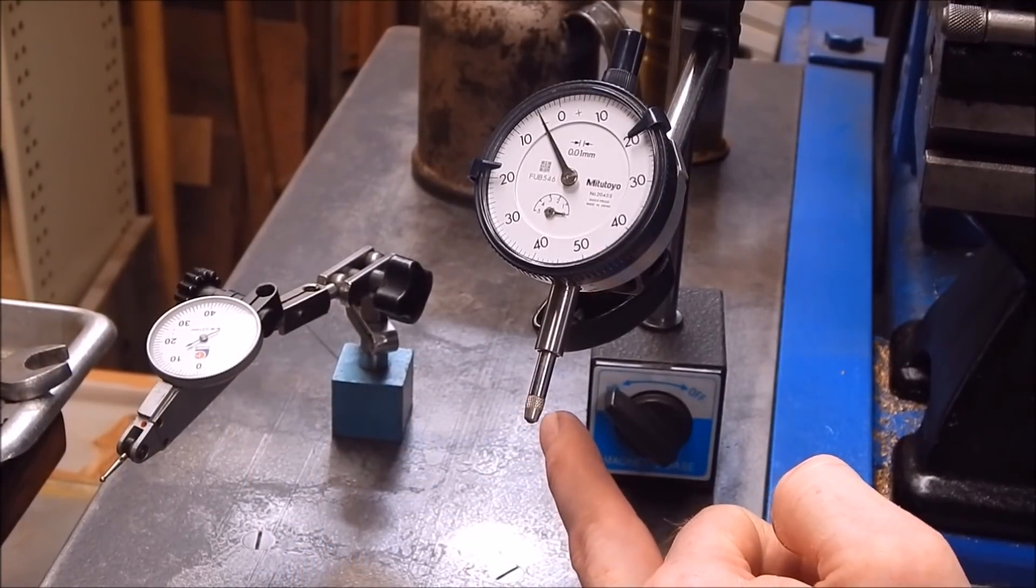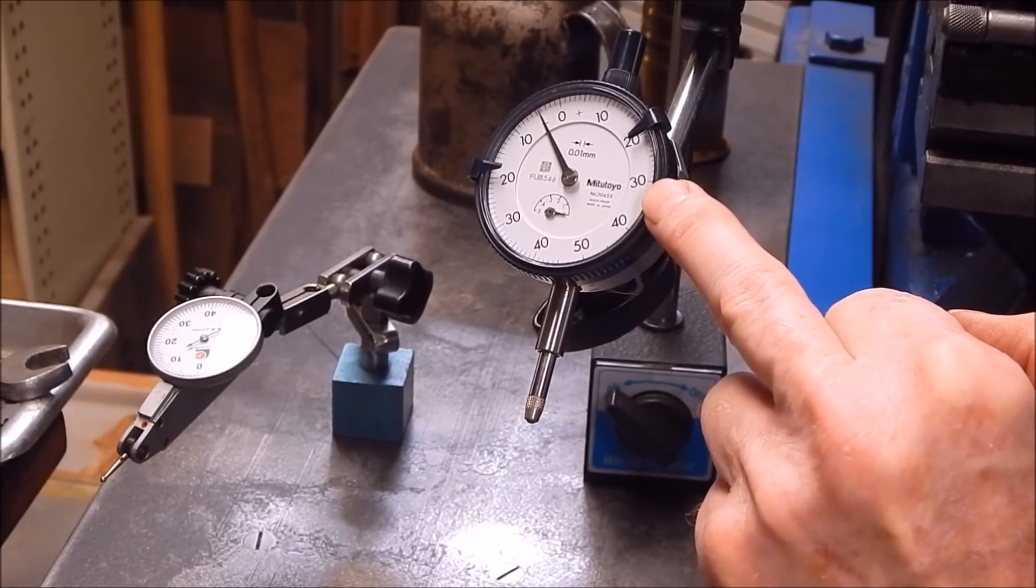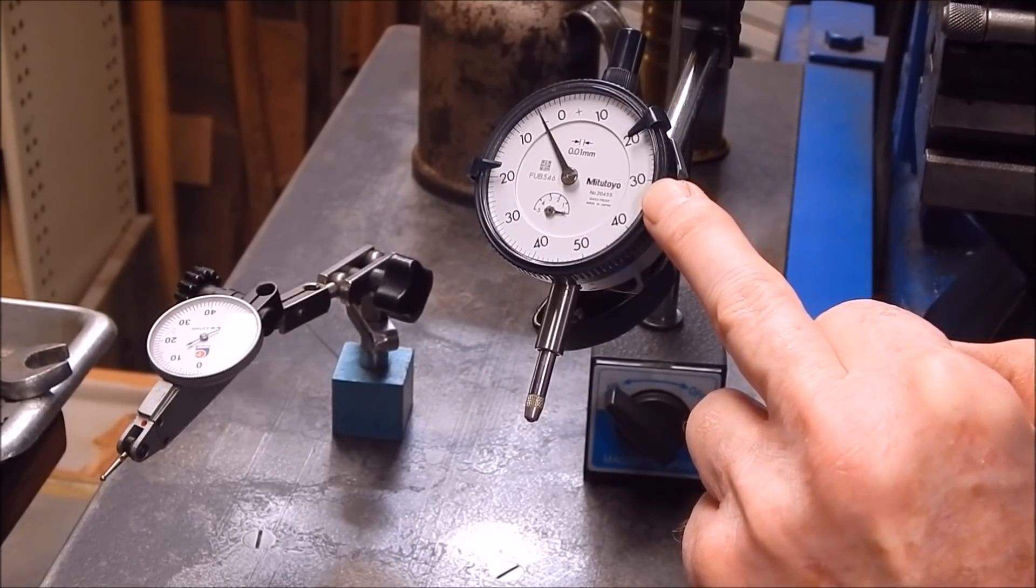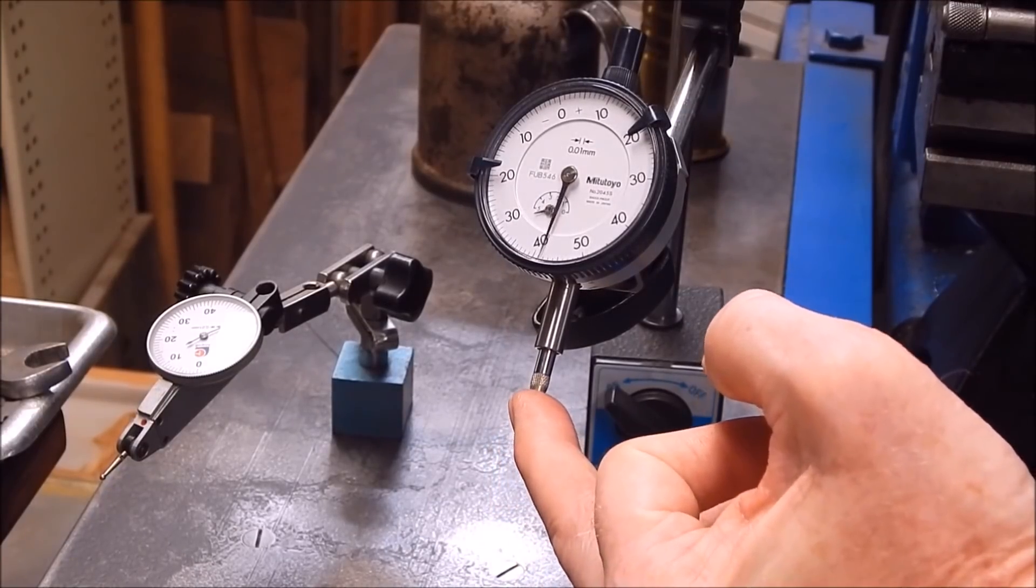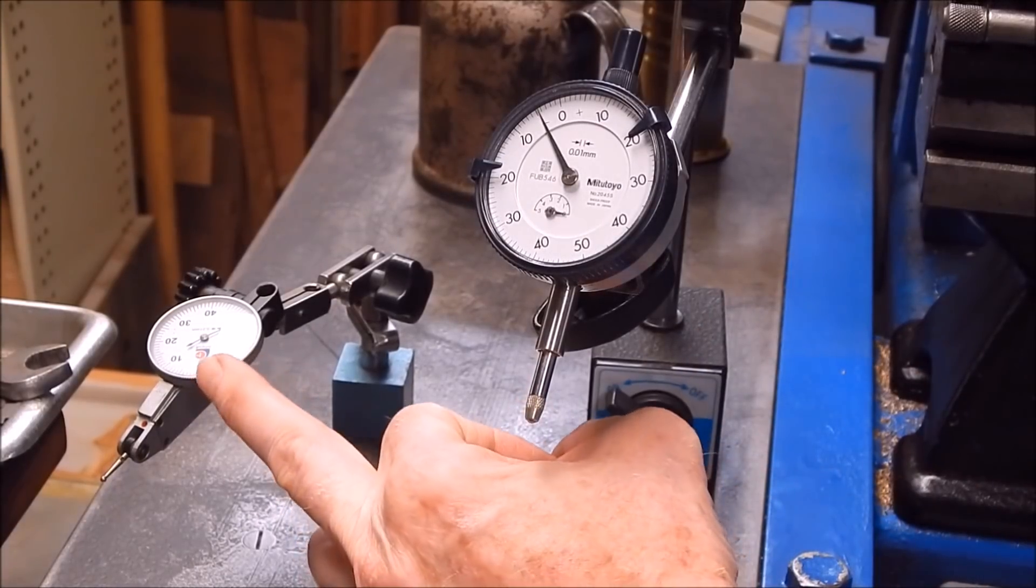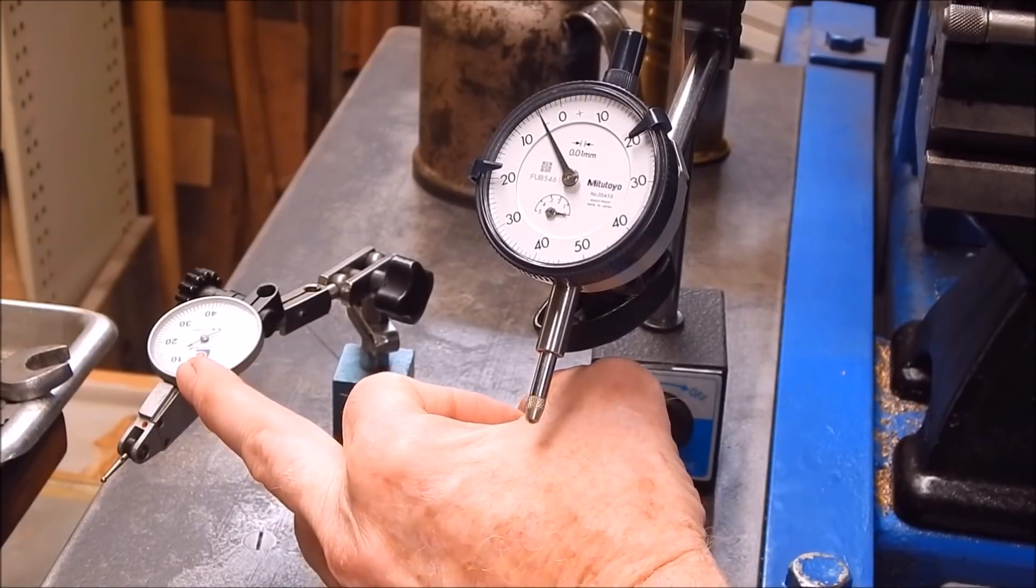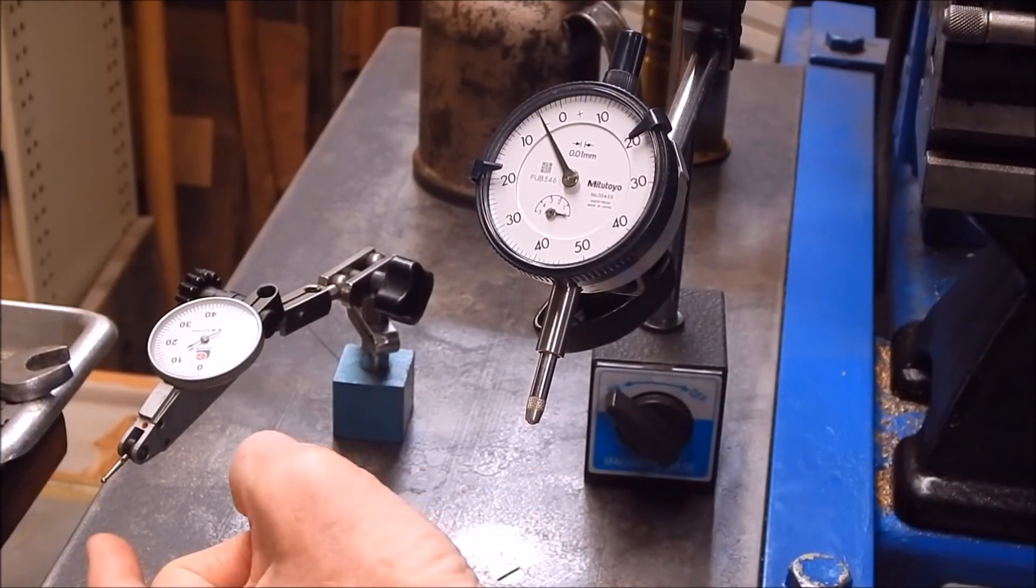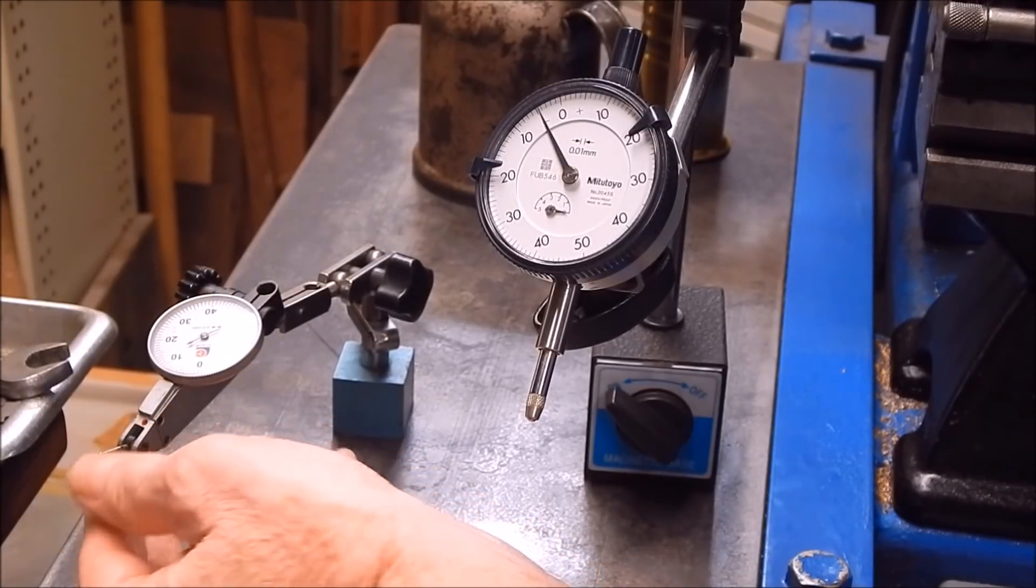Dumb, dumb move. Wrong thing. It's twice as big, which means it's going to be more difficult to get in close to the job. Direct acting, one direction only. Test indicator, much smaller, can get into really confined areas. Won't foul the chuck, like this wheel, the chuck jaws. Can do a multitude of reads in various positions.